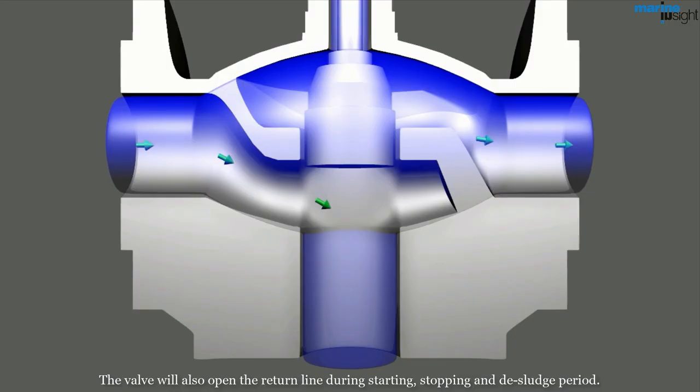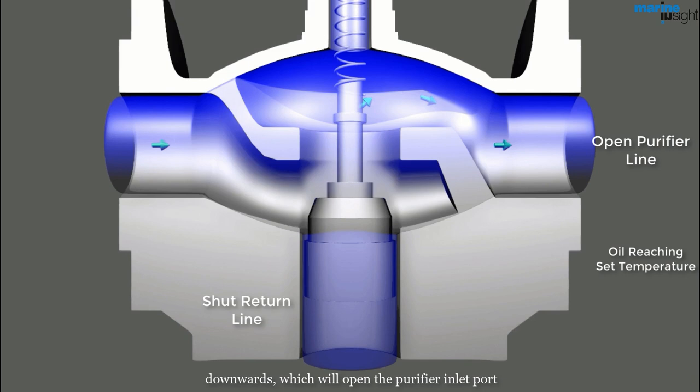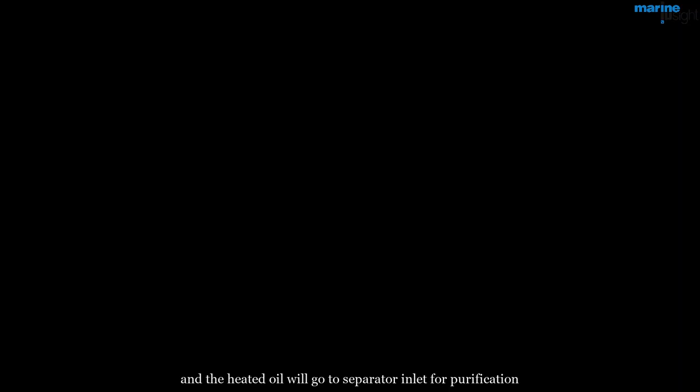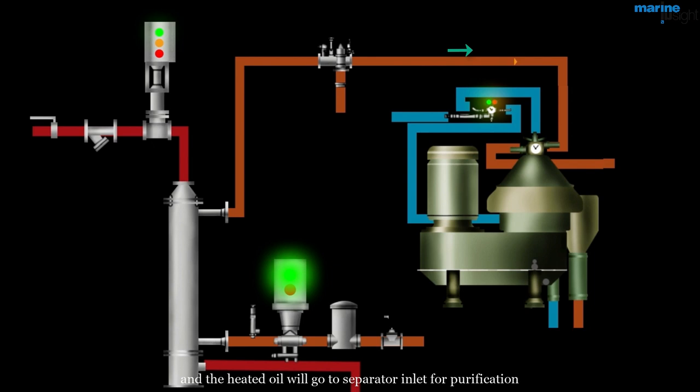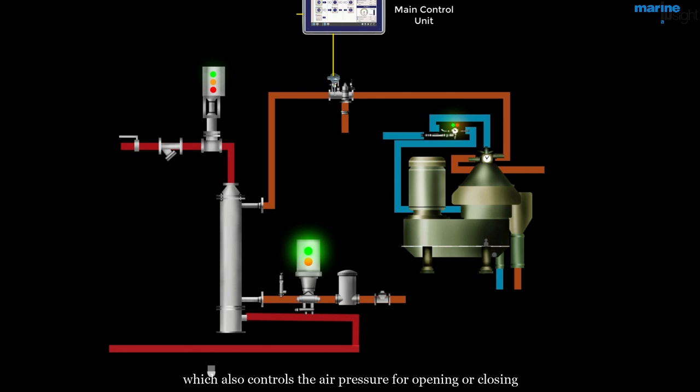The valve will also open the return line during starting, stopping, and desludge period. If the set temperature is reached, the controller will operate the valve downwards, which will open the purifier inlet port, and the heated oil will go to the separator inlet for purification. The thermosensor on this valve sends the signal to the control unit, which also controls the air pressure of the pneumatic control steam valve to reach the desired oil temperature.